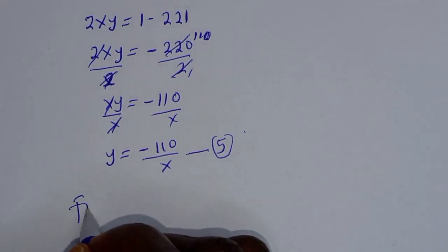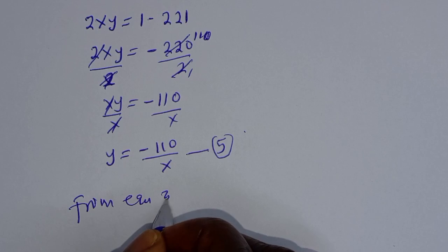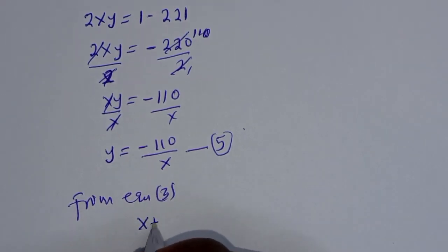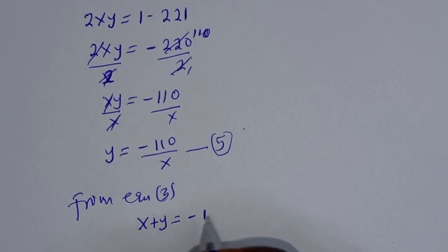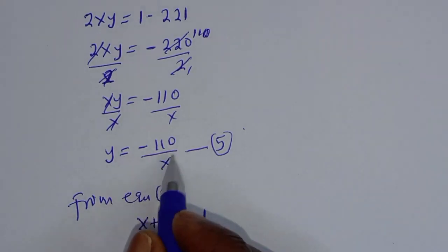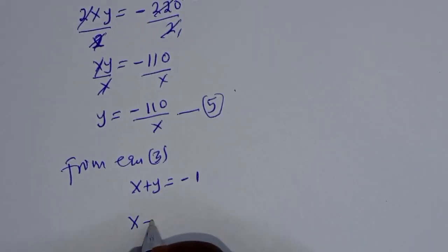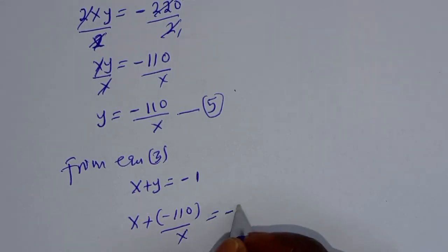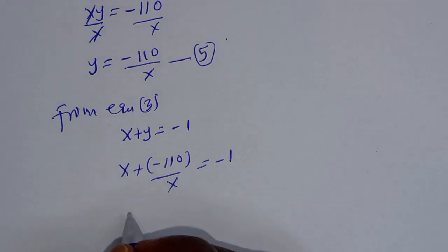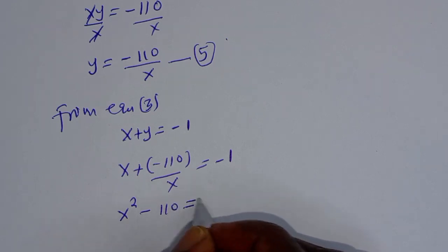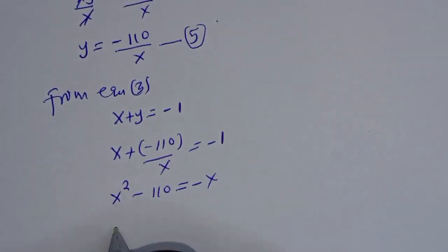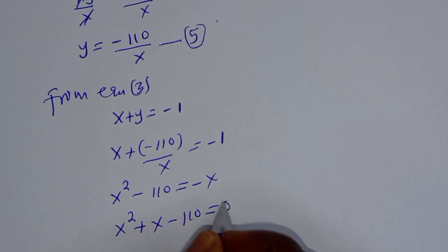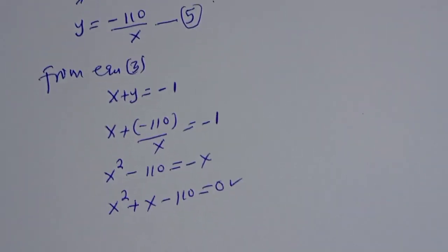From equation 3, x plus y equals negative 1. Substituting y equals negative 110 over x: x plus (negative 110 over x) equals negative 1. Cross-multiplying gives x squared minus 110 equals negative x, so x squared plus x minus 110 equals 0. This is a quadratic equation.